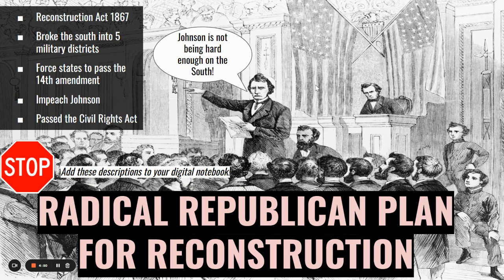The Radical Republicans claimed they needed to impeach Andrew Johnson because he was not being hard enough on the South. They believed he was conspiring with the South and not upholding his duties as president. They also passed the Civil Rights Act to protect all the rights surrounding freed African-Americans after the Civil War. Go ahead and add these descriptions to your digital notebook.